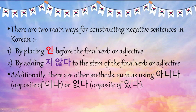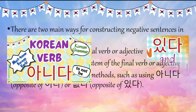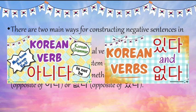But there are other methods too, and we have discussed two of them — one is by using the verb 'anida', and another one is by using 'apta'. So these are two more ways which you can use to create negative sentences. If you don't know how to make sentences using 'anida' or 'apta', then you can go and watch those two particular videos.